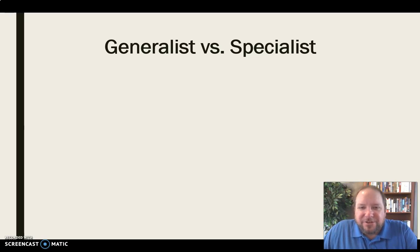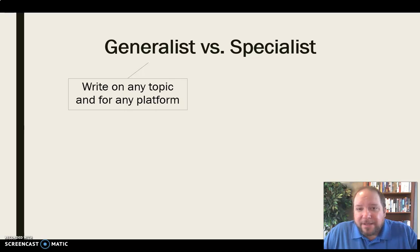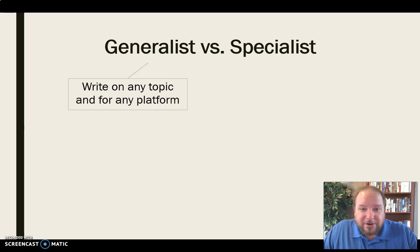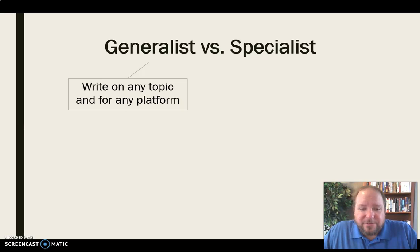What are the advantages and disadvantages of being a generalist versus a specialist? A specialist is somebody who would have a specific niche that they report on, as opposed to a generalist who just goes everywhere. The generalist can write on any topic and for any platform — anything they find of interest in the world. But it can be pretty overwhelming at times: where do you put your focus? How do you know which story to pick?